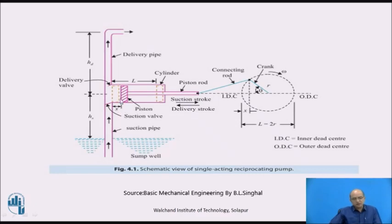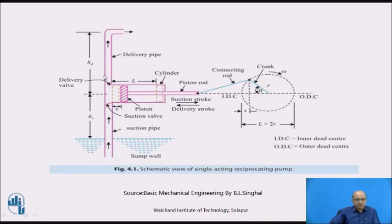At the end of the cylinder, pipes are connected: the suction pipe and the delivery pipe. The delivery pipe delivers the water or liquid to the overhead tank kept on the terrace, whereas the other pipe connected to the cylinder is for lifting water from the storage area, which is called a sump well or storage tank.